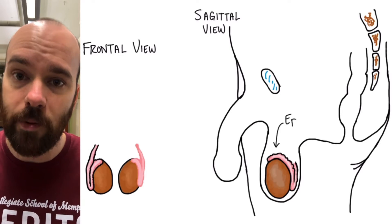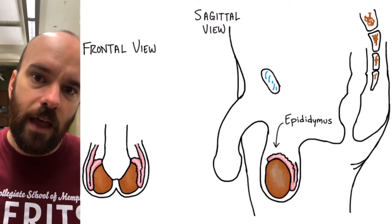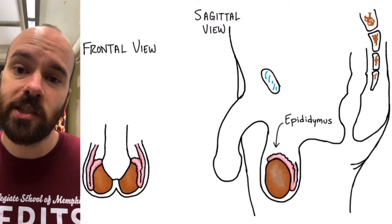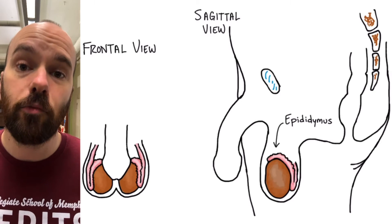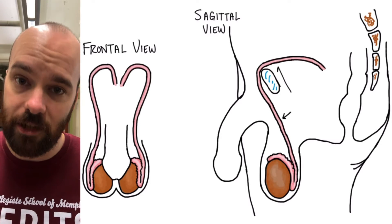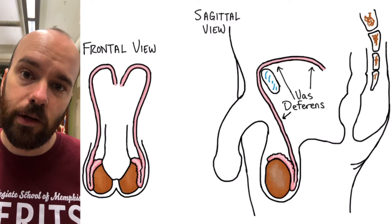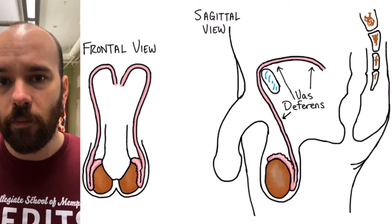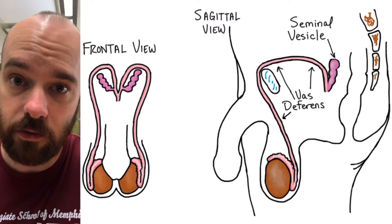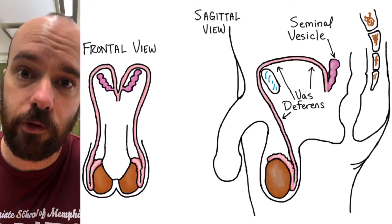Sperm cells travel next through a structure called the epididymis. The epididymis starts at the top or superior part of the testes, then travels down and back up to the vas deferens. The epididymis is basically an extension of the seminiferous tubules where sperm cells will continue to grow, mature, and develop until they're ready for ejaculation. During sexual arousal and ejaculation, the sperm cells will travel up through a tube called the vas deferens. The vas deferens extends from the testes and epididymis upward, anterior to the pelvic bone, and then posterior to the back. Connected to the posterior part of the vas deferens is a pair of glands called the seminal vesicles.